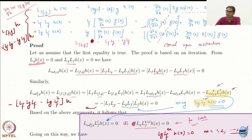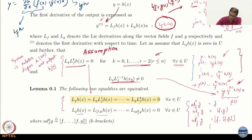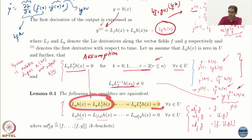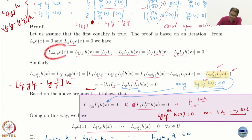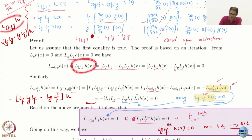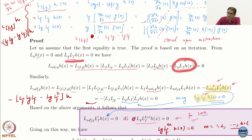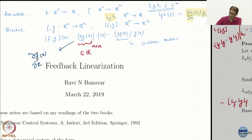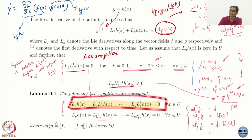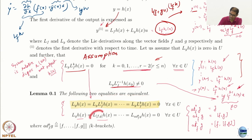The first thing we have is that Lg h = 0 and Lg Lf h = 0. I know that L_{ad_f g} h equals Lf(Lg h) − Lg(Lf h). Expanding: Lf(Lg h) − Lg(Lf h). I know Lg h = 0, so the first term is 0. I also know Lg Lf h = 0 from the assumption. So I have already proved that L_{ad_f g} h = 0.